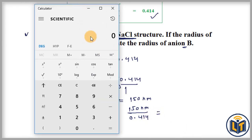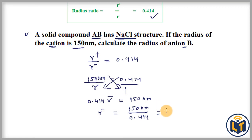Here we have the calculator. 150 is divided by 0.414 and the value which we get is 362. We can write this value in three significant figures: 362 nanometers. This is the radius of the anion which is carrying negative charge.